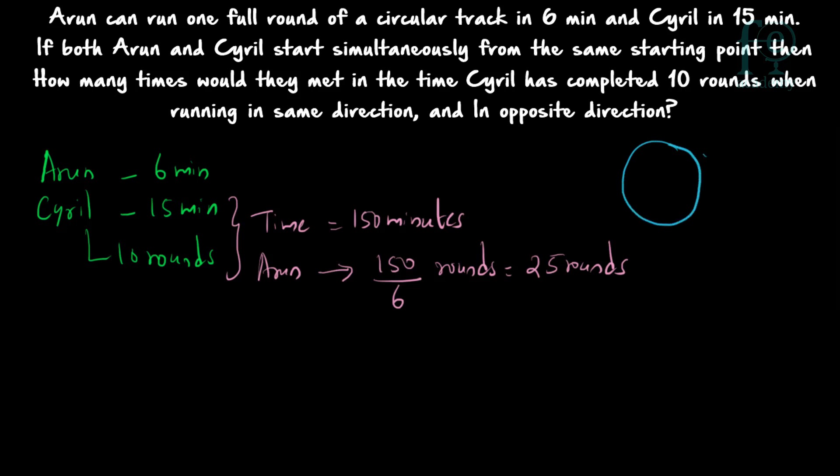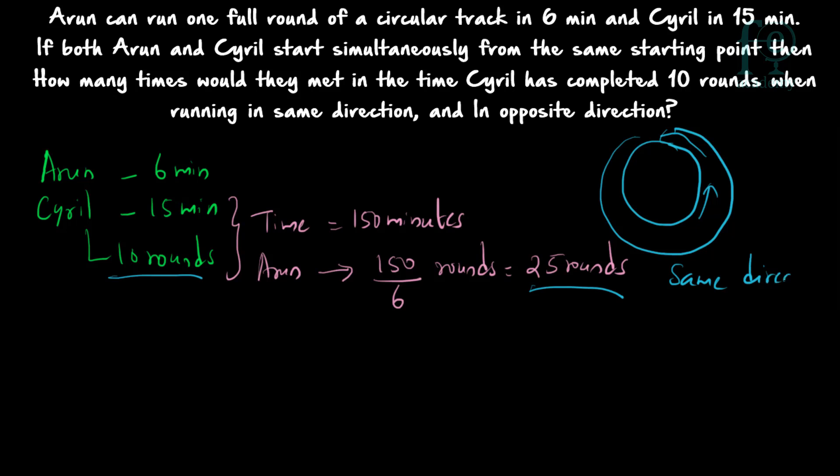Now consider the situation when they are running in the same direction. When running in the same direction, for every round Arun runs more than Cyril, they will be meeting each other. Arun has to run the entire length of the circular track — one full round more — in order to meet Cyril. So for every extra round Arun runs compared to Cyril, they meet once.